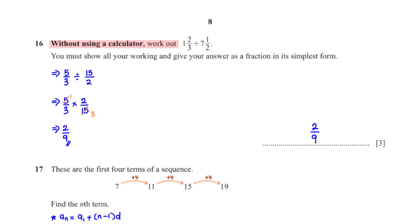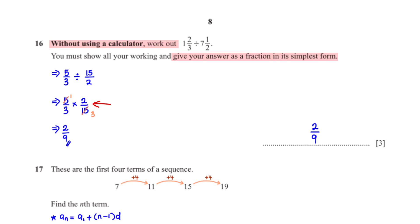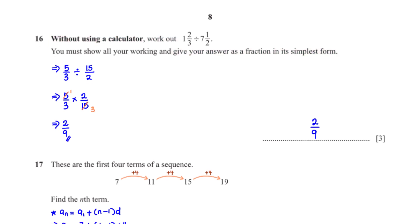Without a calculator, work out 1⅔ ÷ 7½. Give your answer as a fraction in its simplest form. Convert to improper fractions: 1⅔ = 5/3, and 7½ = 15/2. Replace division with multiplication by the reciprocal: 5/3 × 2/15. Cancel: 5 goes into 5 once and into 15 three times. Numerator: 1×2 = 2; denominator: 3×3 = 9. Answer: 2/9.